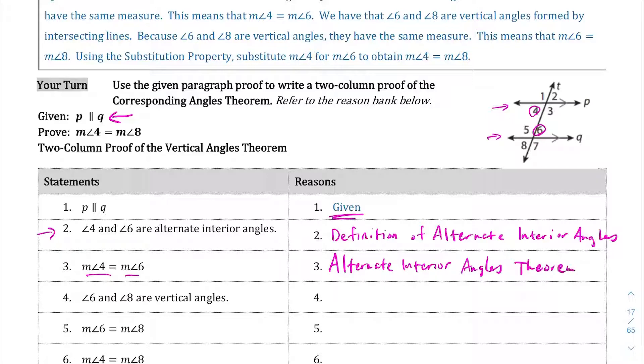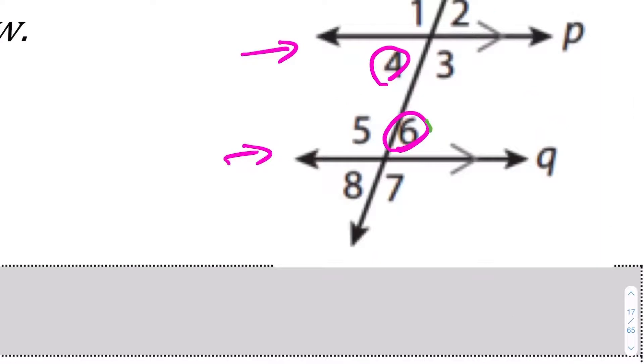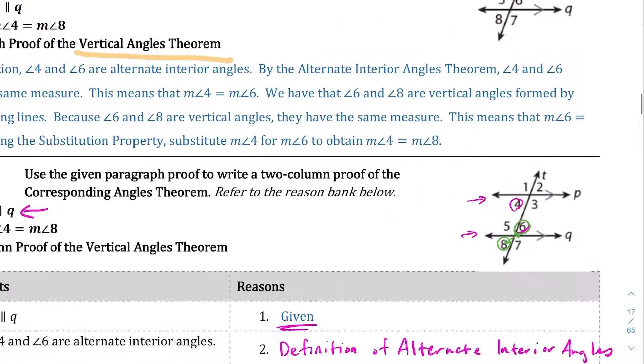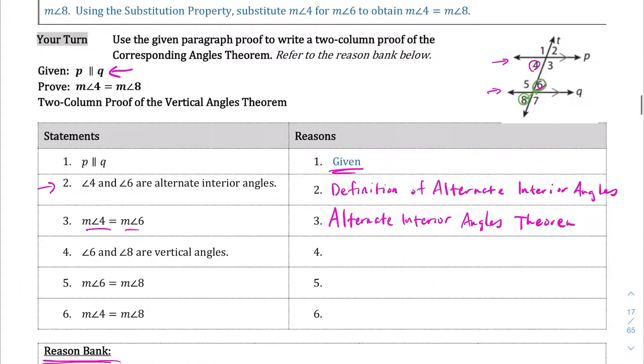Let's take a look at statement 4. 6 and 8 are vertical angles. If we look at 6 and 8, they are vertical angles here, across from each other. And that is just the definition of what vertical angles are. So we're going to write definition of vertical angles.